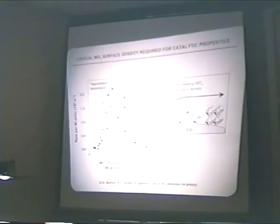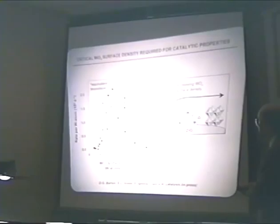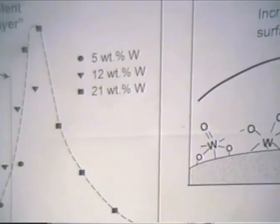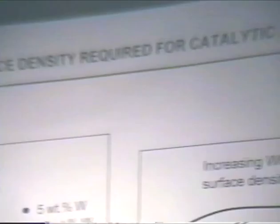The surface density required for maximum activity is larger than what one would expect from an equivalent monolayer of polytungstate, meaning you have to have three-dimensional structures in this material to reach maximum rate. If you agglomerate to too high a temperature, the accessibility of surface atoms decreases and the rate falls. It was the rising part of the curve—from isolated tungstates to active three-dimensional clusters—that we really wanted to explain.